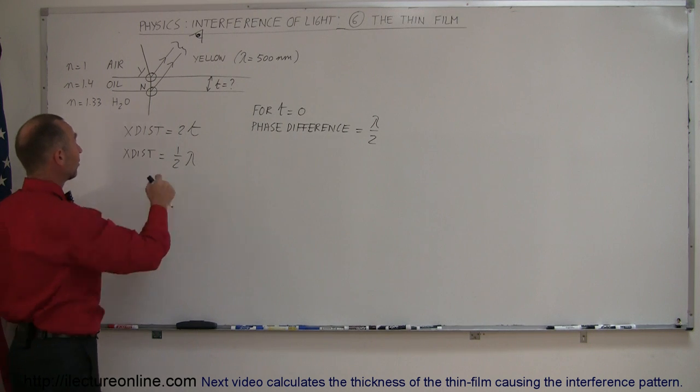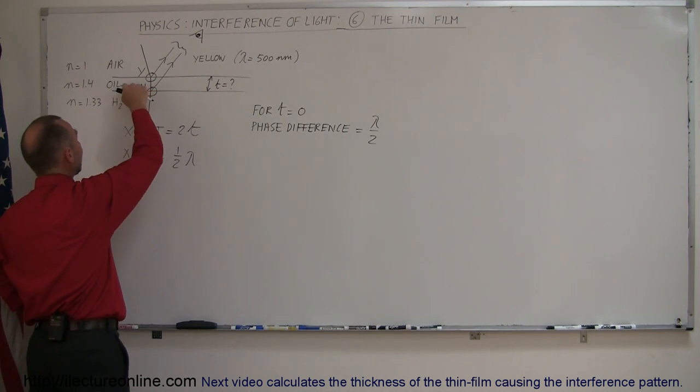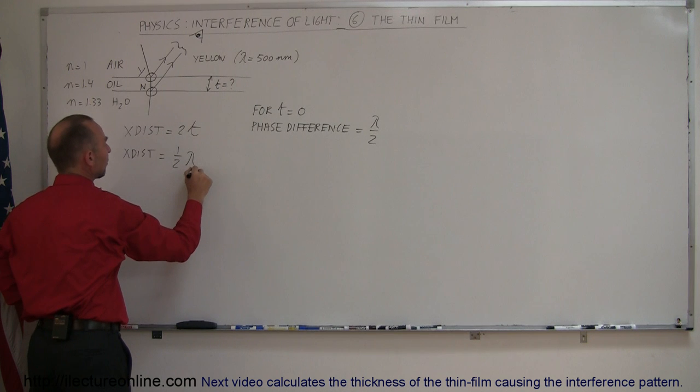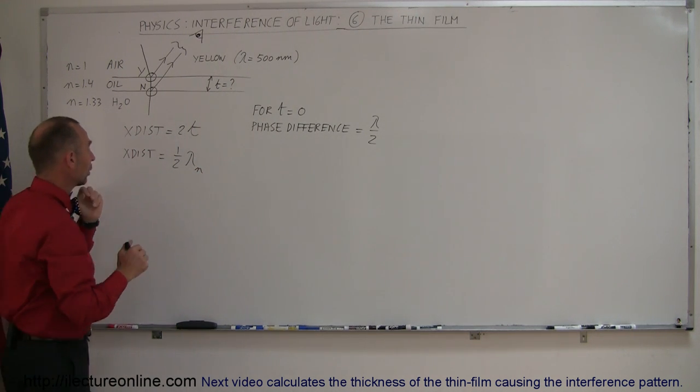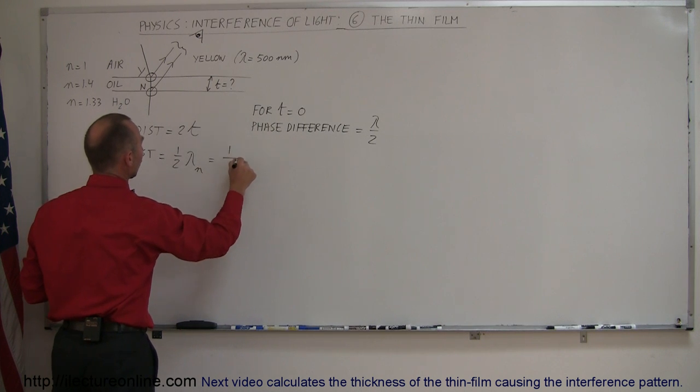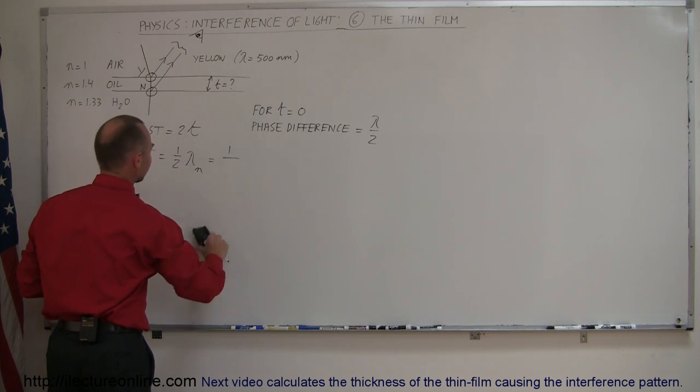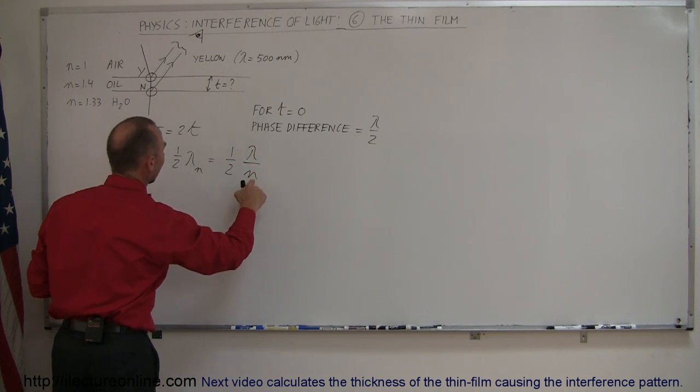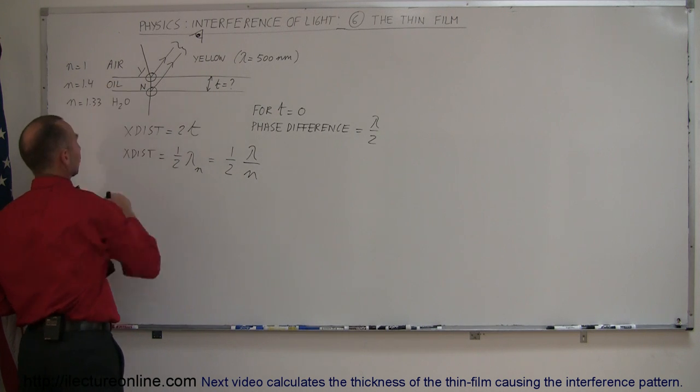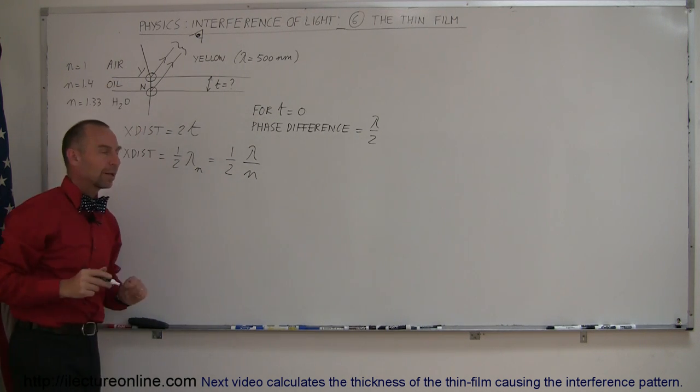Not only that, since the light is traveling through oil and the index of refraction is not equal to one, we have to make sure that we take into account that the wavelength will be different as it travels through the oil. So this will be equal to one half lambda divided by n, where n is the index of refraction of the oil. Now we're ready to go.